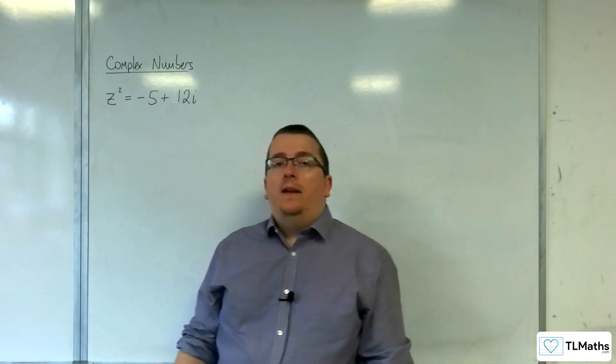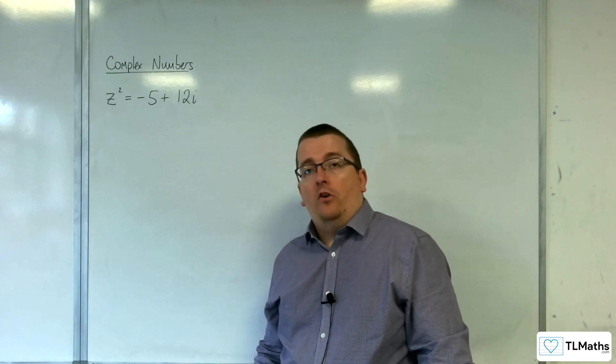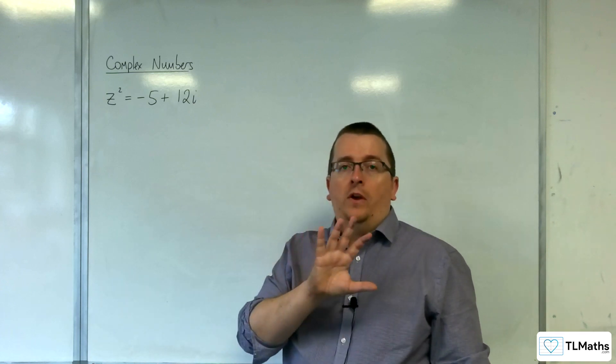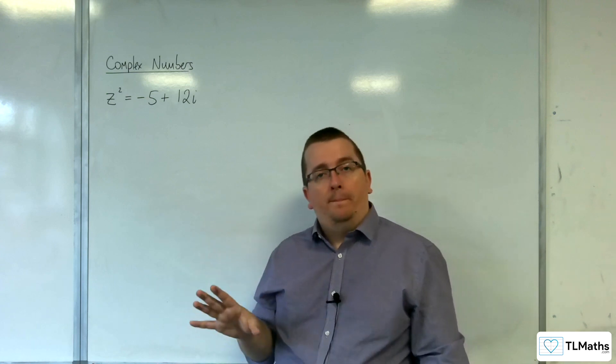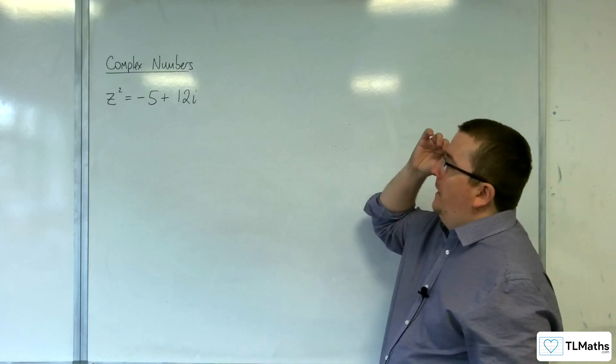Now, to be clear, every complex number has a square root. So you're not going to get any kind of ones that won't have a square root or have a problem. But whether you'll get nice numbers or not, that's a completely other matter.